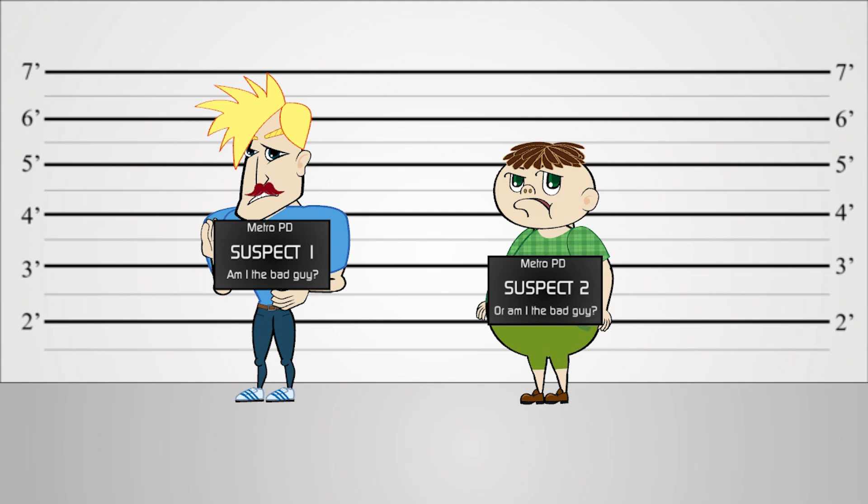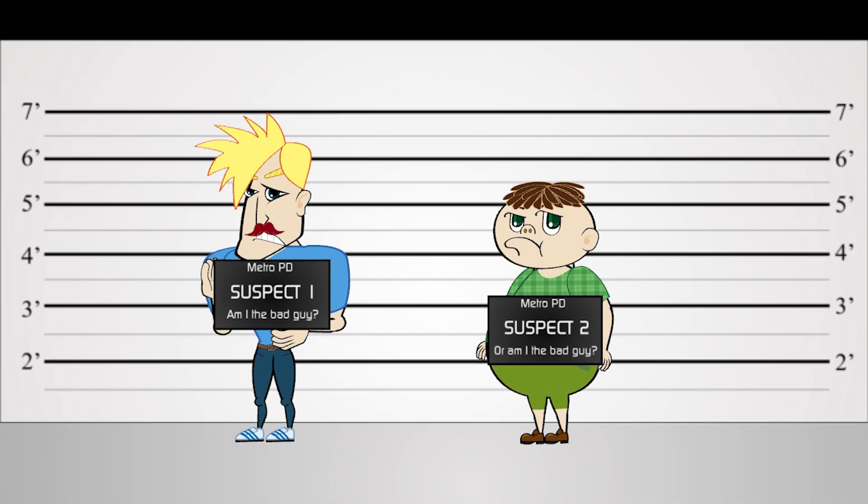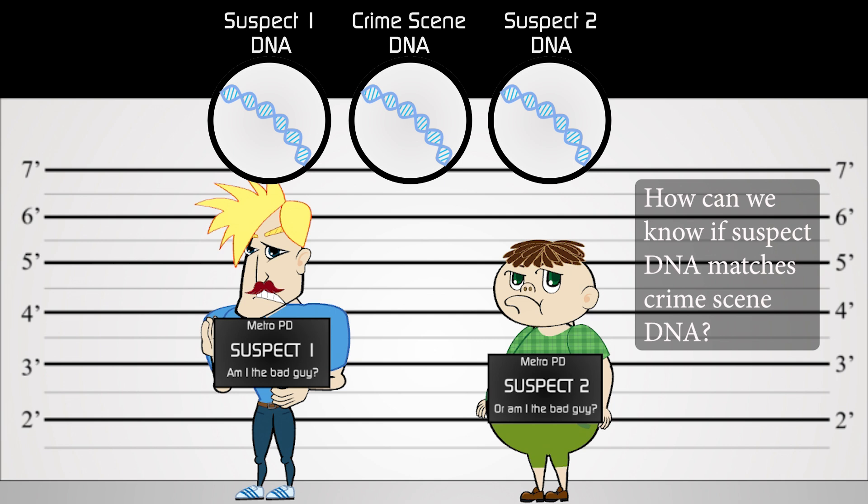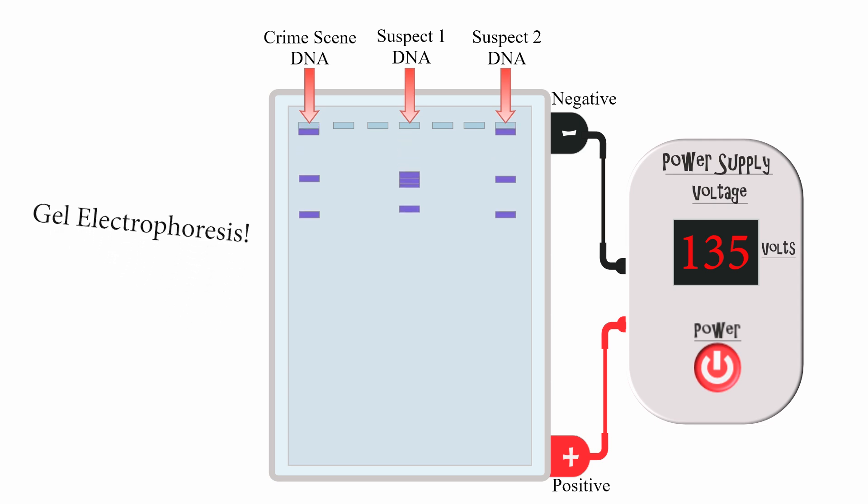Have you ever wondered how scientists are able to match DNA from a crime suspect to DNA found at a crime scene? One of the main techniques that makes this possible is gel electrophoresis.